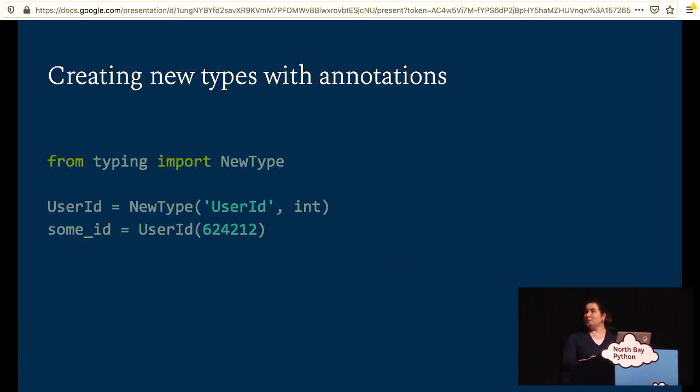It's also possible to use type checking to create new types, similar to the way that I showed you on expanding the built-in types earlier. The type checker will treat this new type as if it were a subclass of the parent type, in this case, an integer. So you can do things like add two user IDs together, but the result of that will be an integer. So if you're trying to pass in that result of that computation to a function that's expecting a user ID, it'll throw an error.